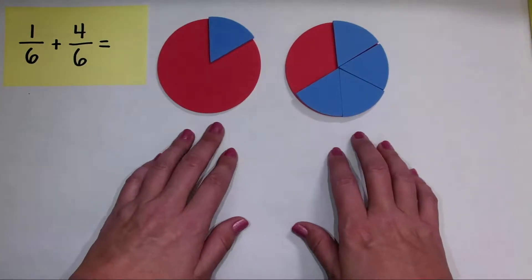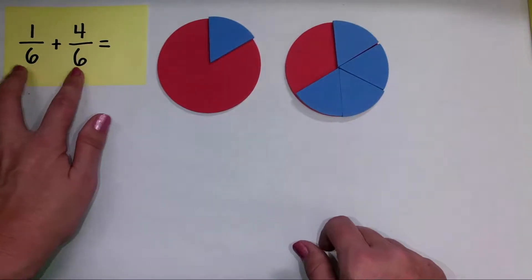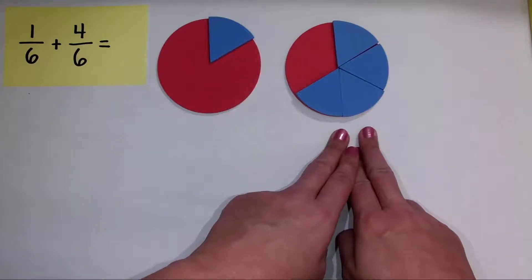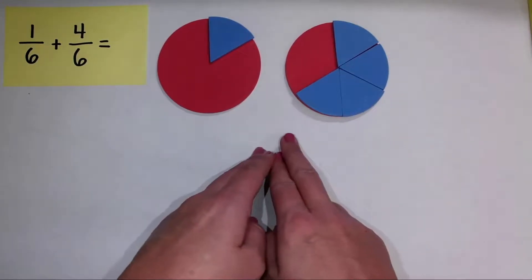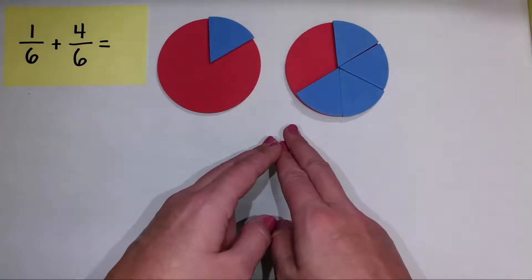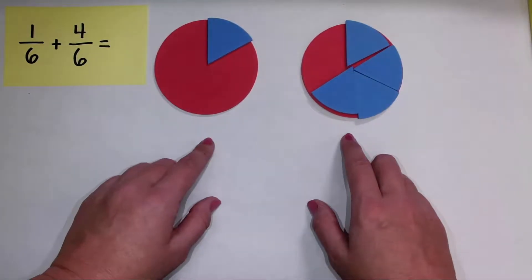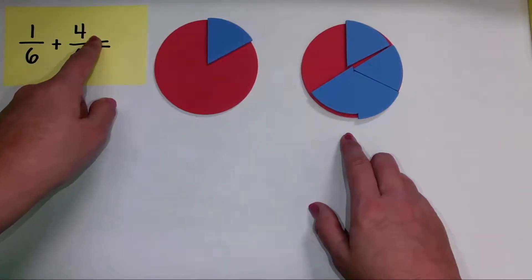Now I like to set these up separately because these are two different addends. I have one sixth and I have four sixths. Now we are going to add these together. We're not just going to do this, that doesn't show adding together, but we want to emphasize that we're adding the parts of the fraction,